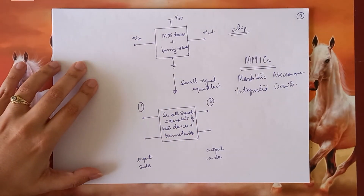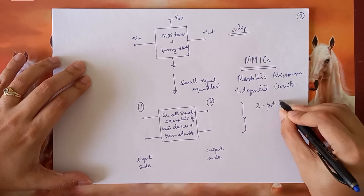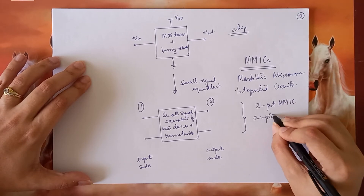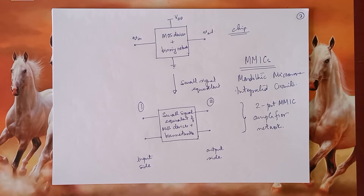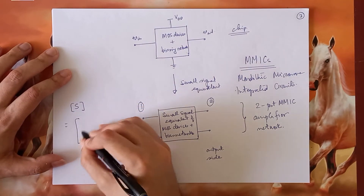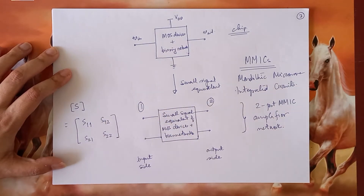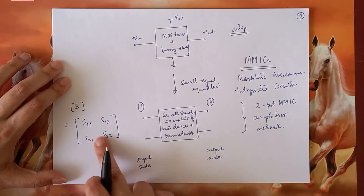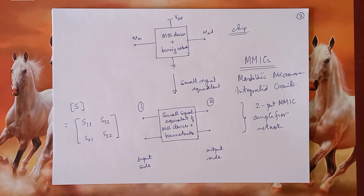Coming back to MMIC — if you look at an MMIC amplifier, it effectively becomes a two-port network. Since this is a two-port network, I can define an S-matrix. This S-matrix is for a given bias condition and for a given frequency, because S-parameters depend on both bias conditions as well as frequency — the two points mentioned during the initial part of this lecture.